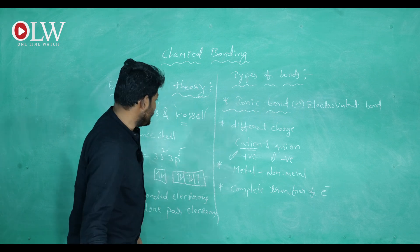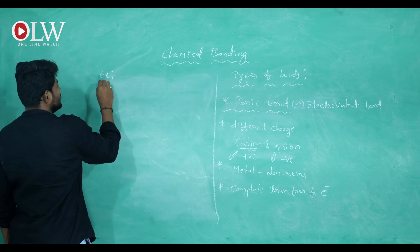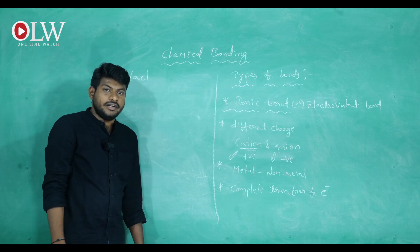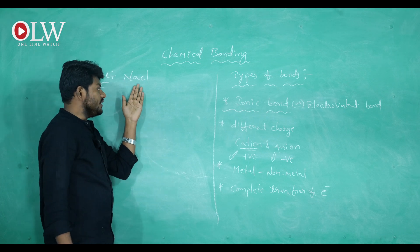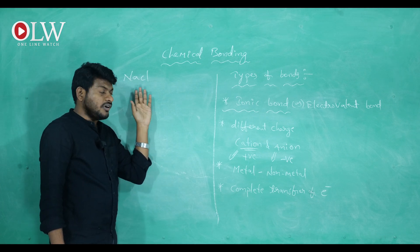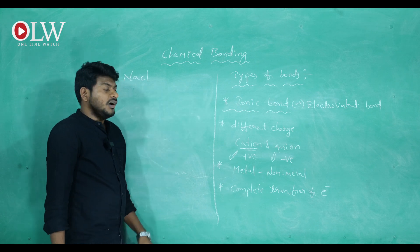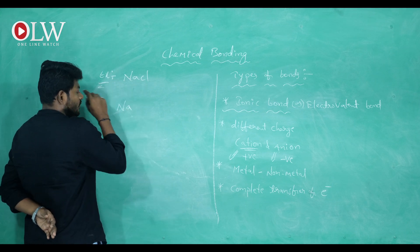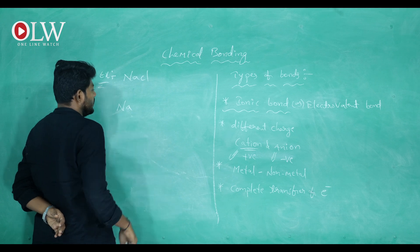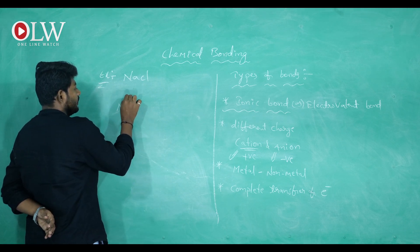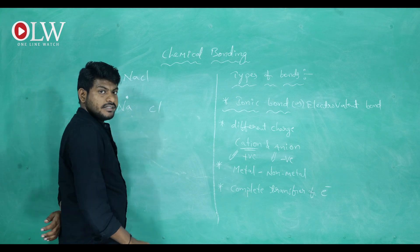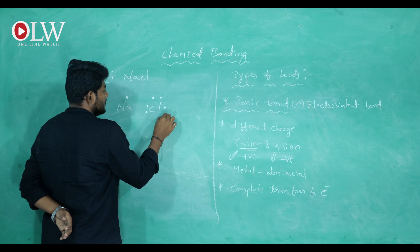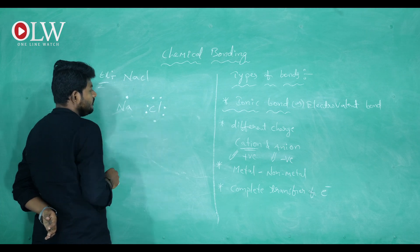Now let's see an example of how the ionic bond forms. We'll take NaCl — sodium chloride, common salt. In NaCl formation, an ionic bond is formed. First, sodium has only one valence electron. Chlorine contains seven valence electrons in its outermost shell.